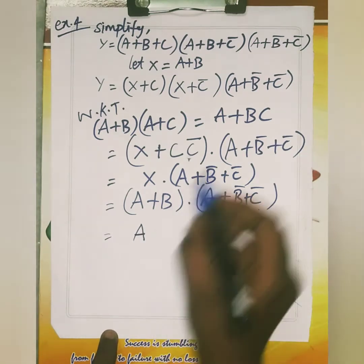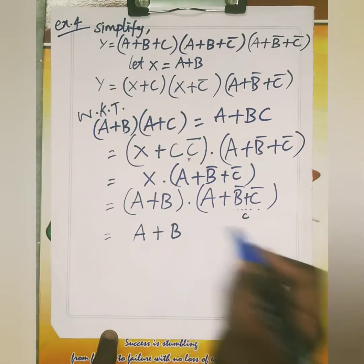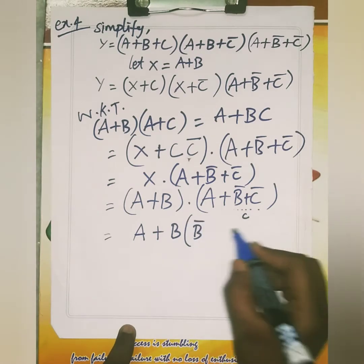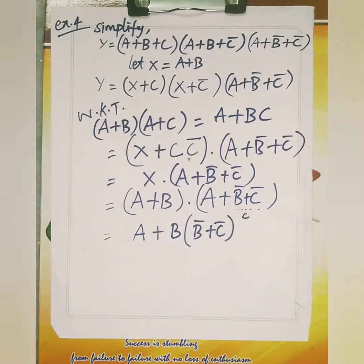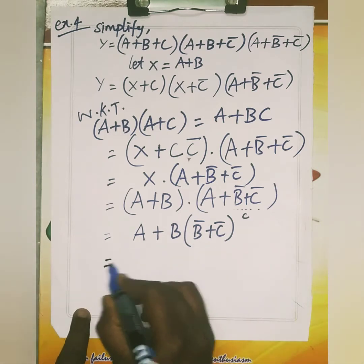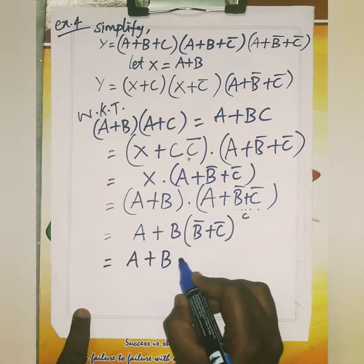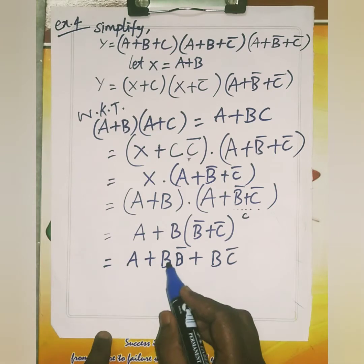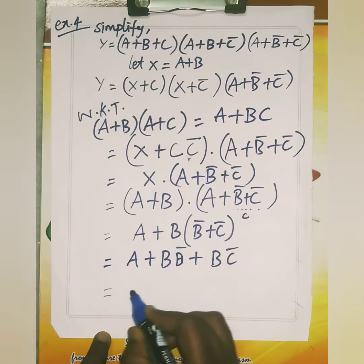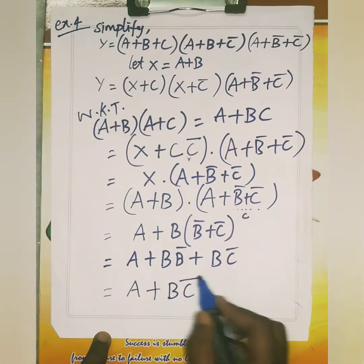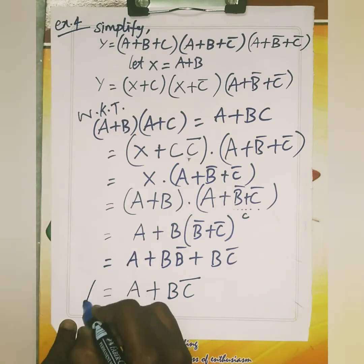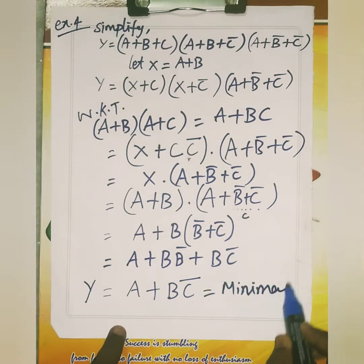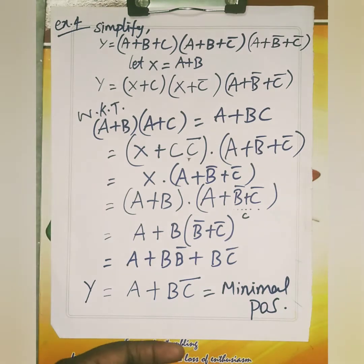In terms of C, we have B complement plus C complement. Now multiply B inside the bracket: B times B complement plus B times C complement. This term becomes 0. So your final answer is A plus B complement. This is your minimal product of sums form.